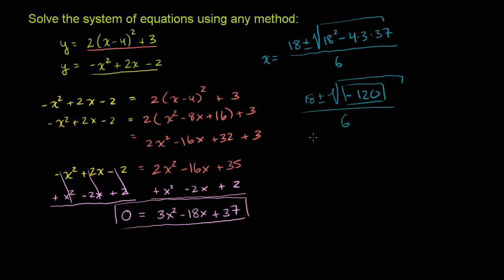But we definitely end up with a negative number under the radical here. Now, if we're dealing with real numbers, there is no square root of negative 120. So there is no solution to this quadratic equation. There is no solution.